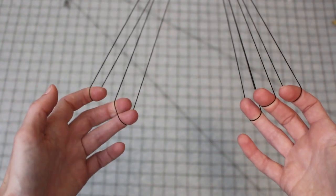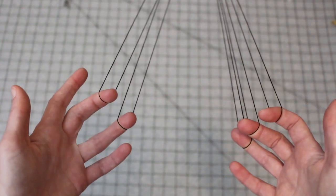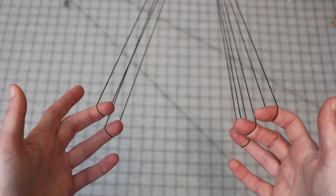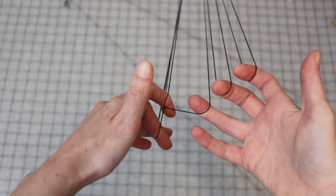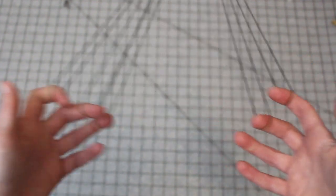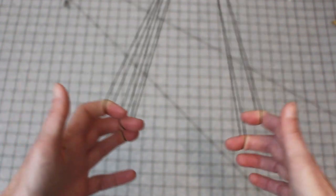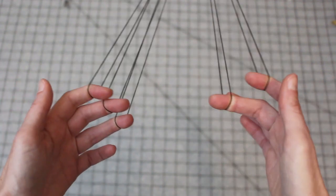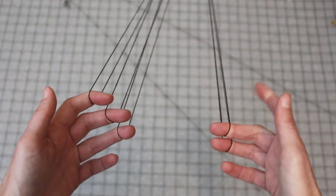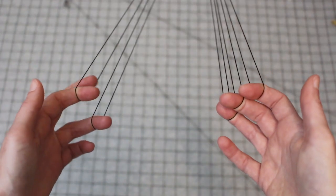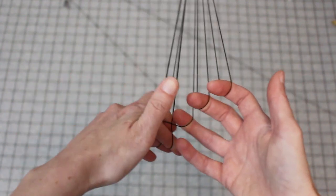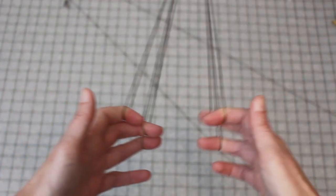Then you're going to walk these two threads onto your ring and middle fingers. Take your index finger, come through and grab the thread that's on your other ring finger and pull it tight, and then you're just going to keep doing that. Walk these two through, grab the other one, pull it tight, and so on.